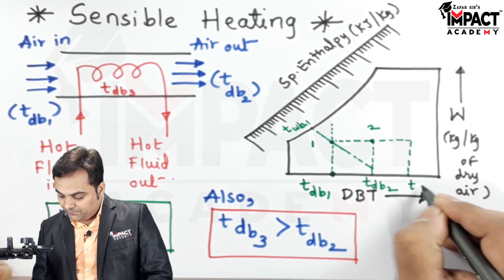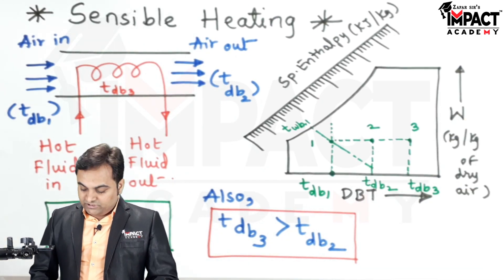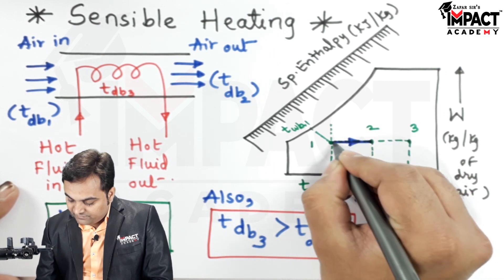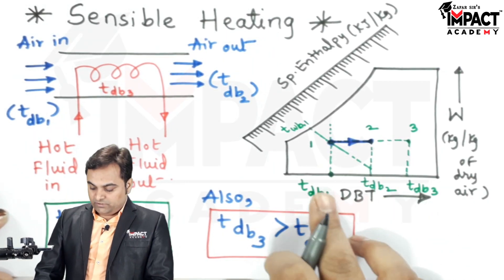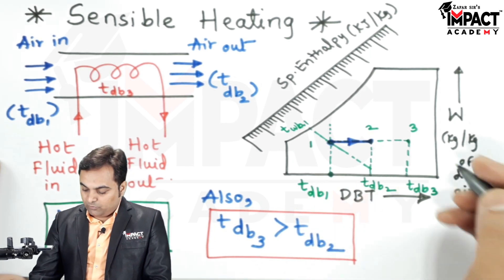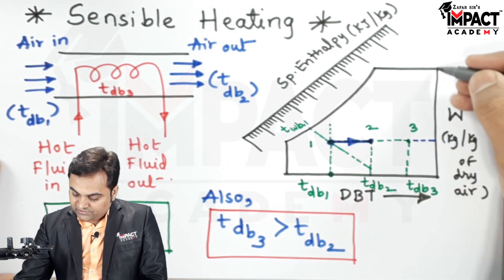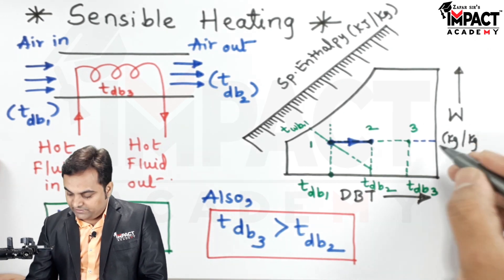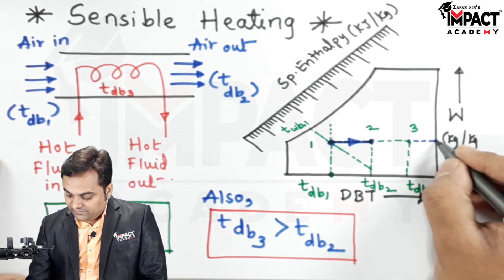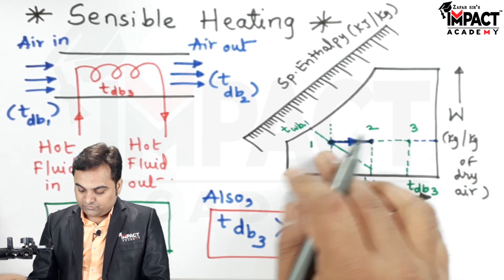Now this process, which is from 1 to 2, it is showing sensible heating wherein, as we see here, the dry bulb temperature of air increases from t_db1 to t_db2, and the moisture content is same. Like if we plot this horizontal line on this vertical line which is showing the specific humidity, we can clearly see that w1 is equal to w2. That is, the specific humidity remains constant and only the temperature is increasing, so that is basically called as the sensible heating.